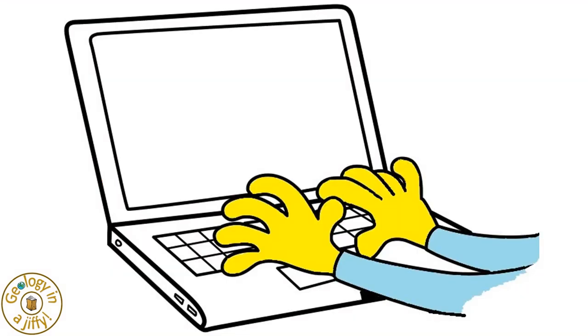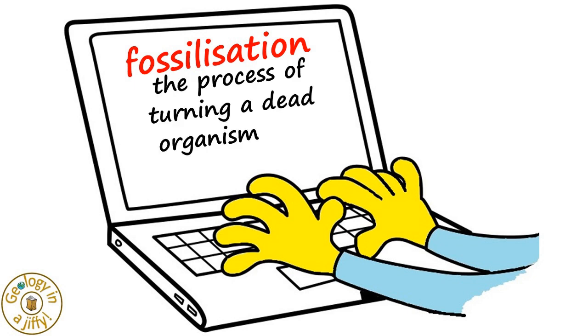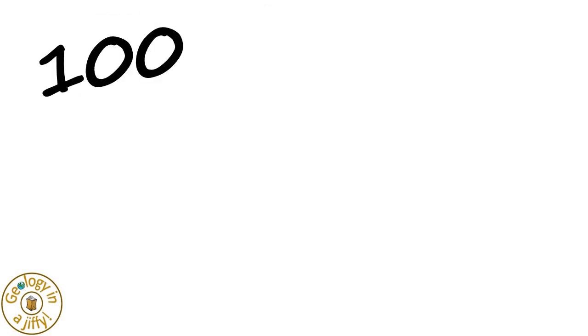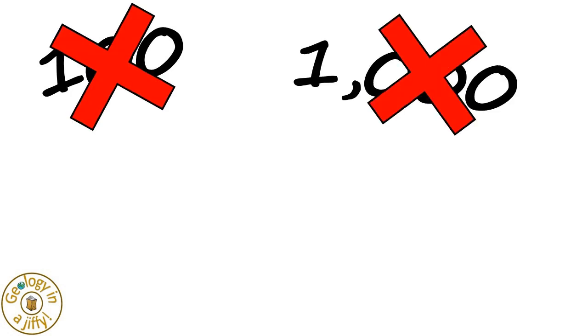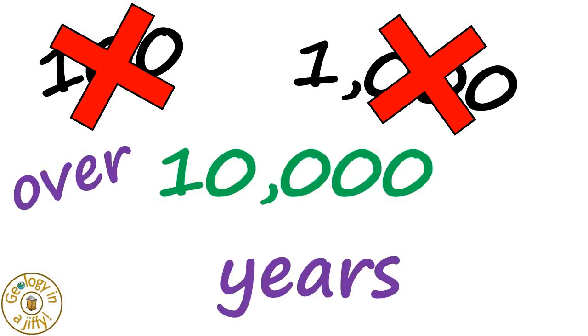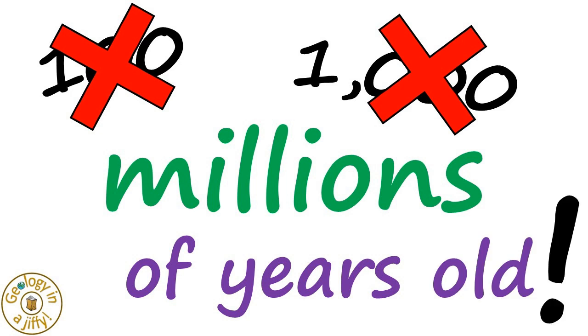The process of making a fossil is called fossilisation, which is the process of turning a dead organism into preserved remains. This process does not take 100 years, or even 1,000 years. To be a fossil, the remains have to be over 10,000 years old, with most fossils being millions of years old. Wow!